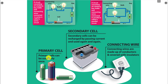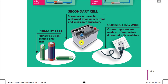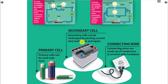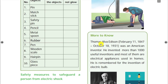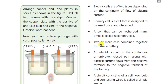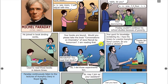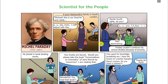To conclude: a primary cell cannot be recharged; a secondary cell can be recharged many times. Connecting wires and these components together form simple, parallel, or series circuits. In the next part of this video we are going to see about conductors and insulators, and a very interesting story of Michael Faraday. I hope this video will be useful for you. Thank you.